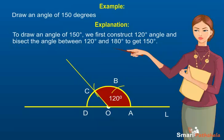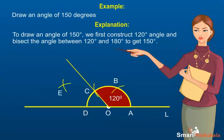Step 7: With C as center and a radius more than half of CD, draw an arc in the interior of angle DOC. Step 8: With D as center and the same radius, draw an arc in the interior of angle DOC that cuts the previous arc at E. Step 9: Join OE. Angle AOE is the required 150-degree angle.